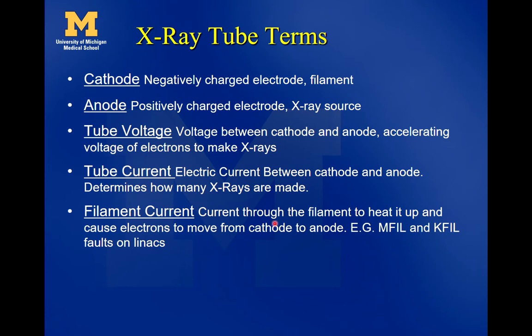The tube current is the electrical current between the cathode and the anode. It determines how many x-rays are made — more tube current means more x-rays produced, and also more heat on the anode. These days, it's usually done by pulsing. The filament current is the current through the filament to heat it up and cause the electrons to move from the cathode to the anode after the voltage is applied. They won't move just on their own.